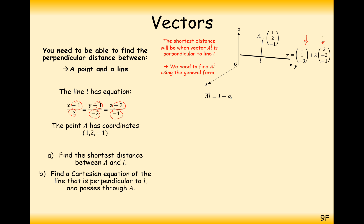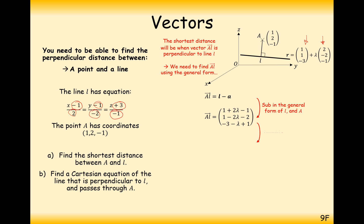We get from position A to the line L by taking the line L and subtracting coordinate A. The line gives us 1 plus 2 lambda, 1 minus 2 lambda, minus 3 minus lambda. Then we subtract our coordinate for A: subtract 1, subtract 2, and subtract minus 1 (which is effectively add 1). Working this out, we get: 2 lambda, minus 1 minus 2 lambda, and minus 2 minus lambda.